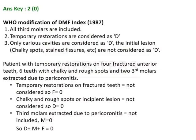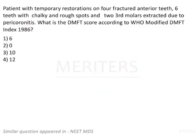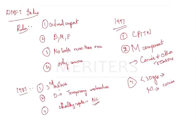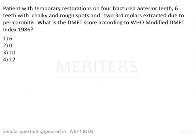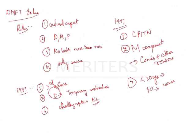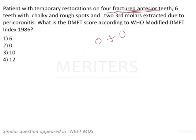Coming back to the question: temporary restorations are considered decayed according to the 1987 index. However, in this question, the temporary restorations are on fractured anterior teeth — not on a cavitated tooth. So that counts as 0. Chalky spots are also considered 0. The two third molars were extracted due to pericoronitis, not due to caries, so again that is 0. Therefore the answer for this question is 0.